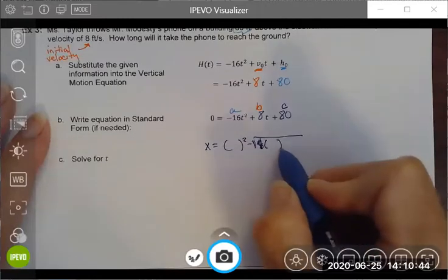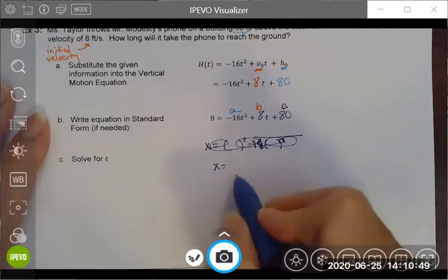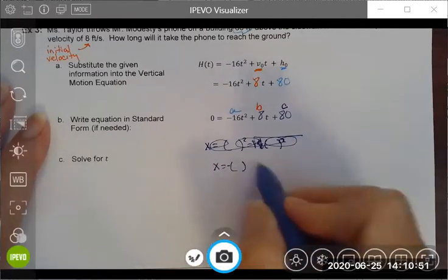It's negative b plus or minus the square root of b squared minus 4 times a times c, all divided by 2 times a.